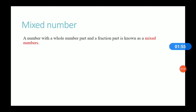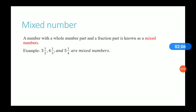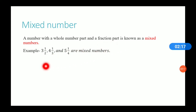So what is a mixed number? In a mixed number or mixed fraction, there is a whole number part and a fraction part, and this type of number is known as a mixed number. For example, 3 1/2, 4 1/3, 5 1/4. Here 3 is the whole part and 1/2 is the fraction part. Similarly, in 4 1/3, the 4 is the whole part and 1/3 is the fraction part.